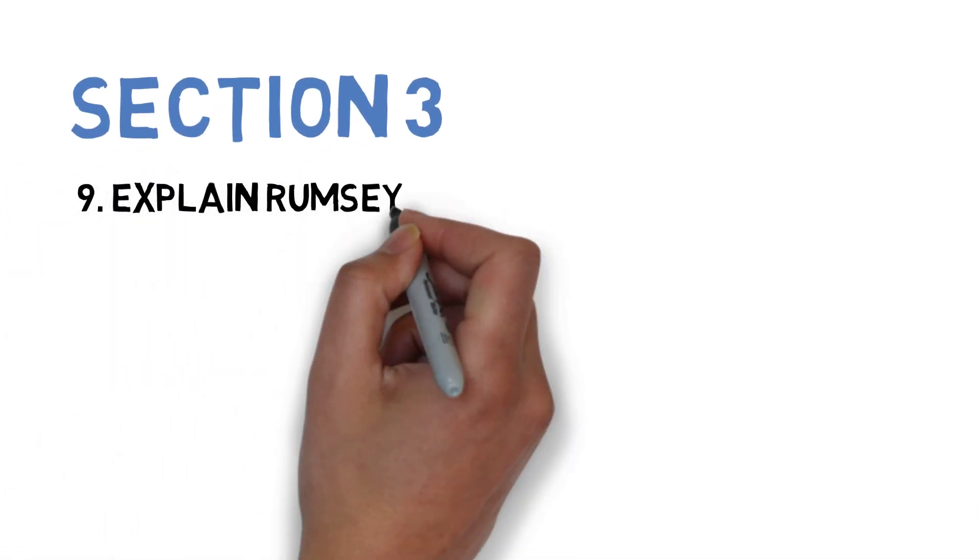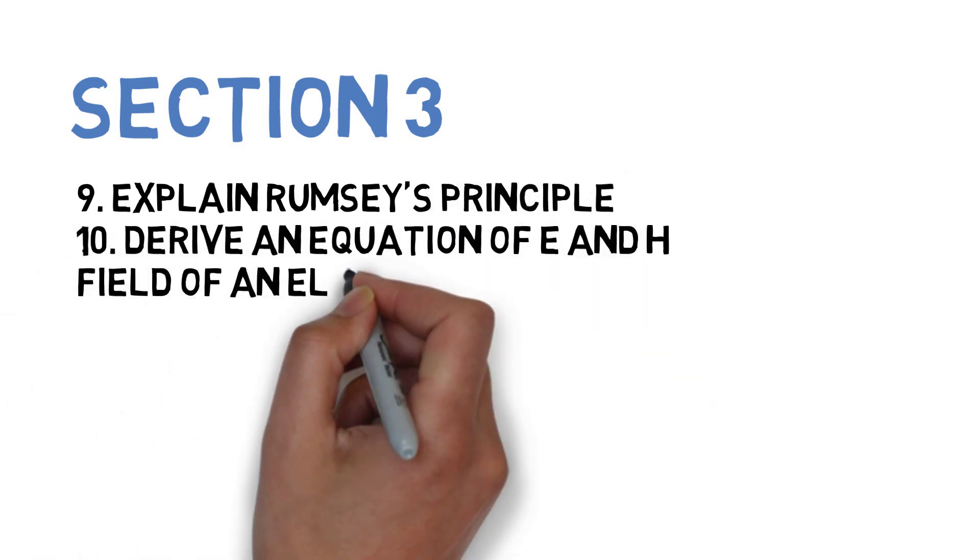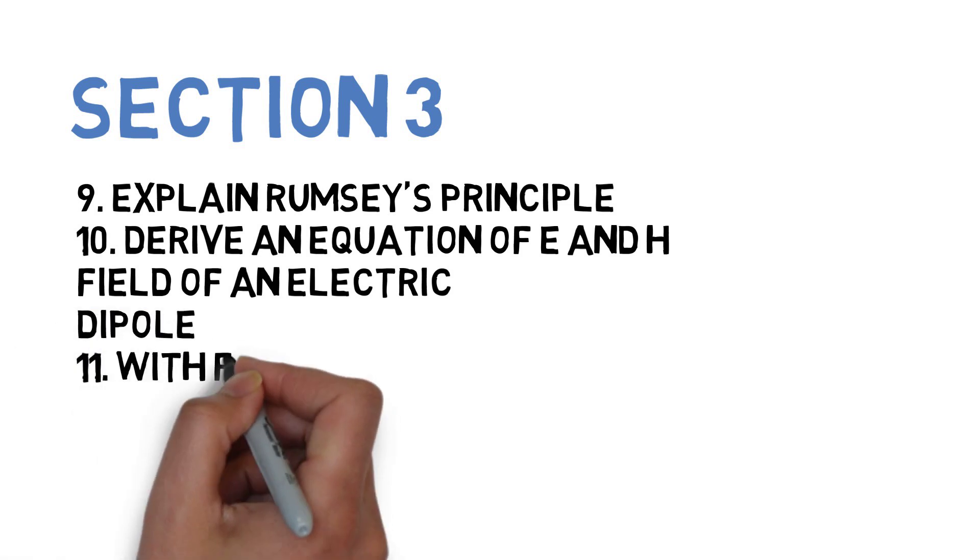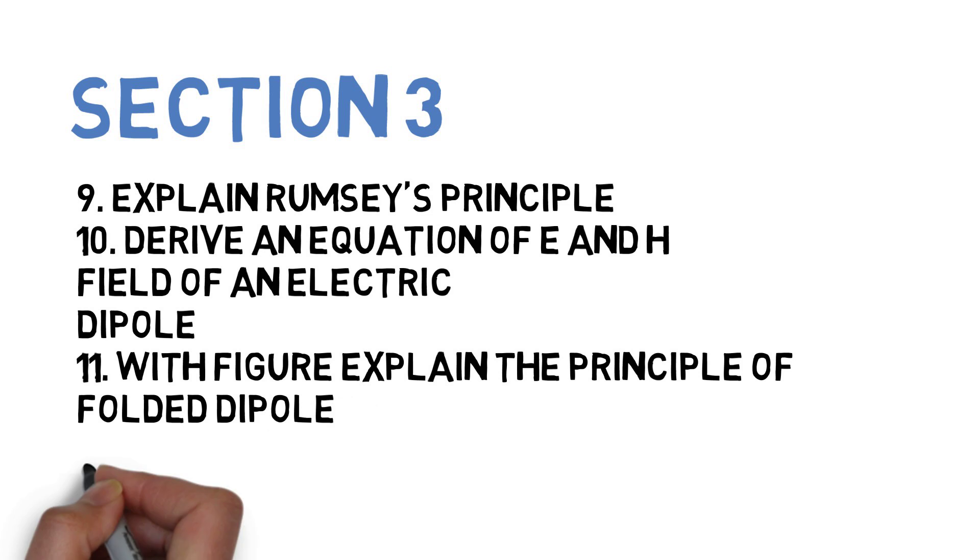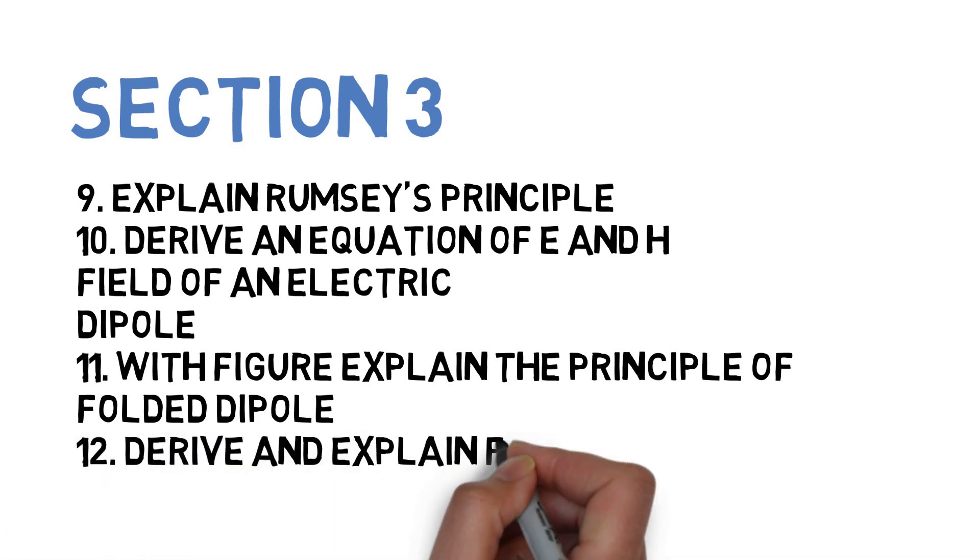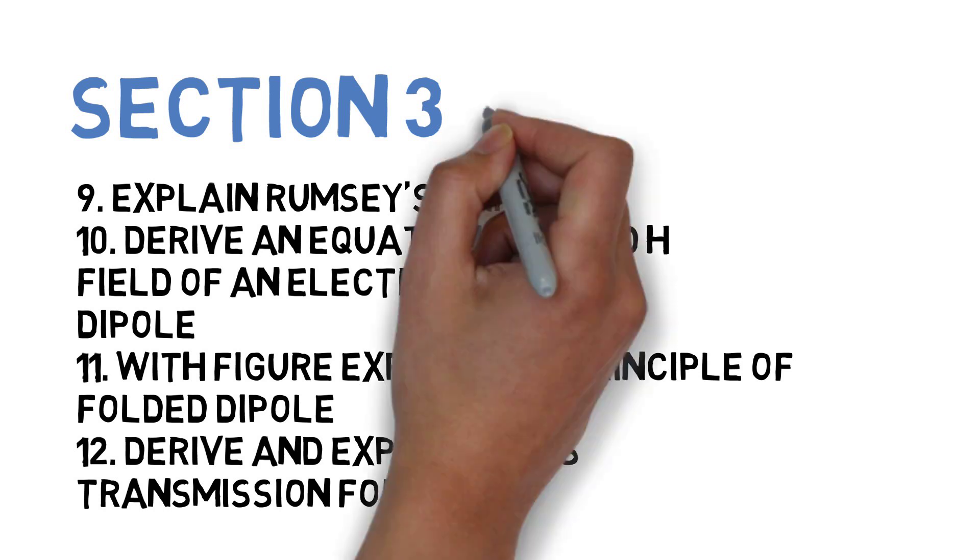Let's go to Section 3, wherein the first is explain Ramsey's principle. Next is derive an equation of E and H field of an electric dipole. Next, with the figure, explain the principle of folded dipole. And the last one for this particular section is derive and explain Friis transmission formula. So guys, these four questions you have to do for Section 3.